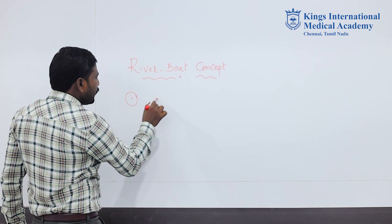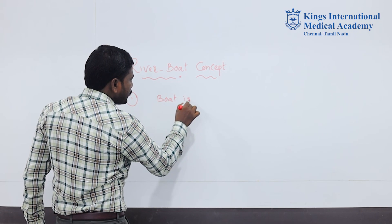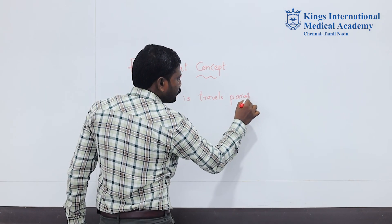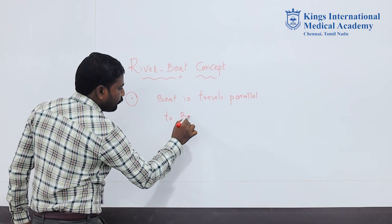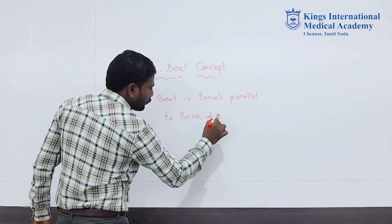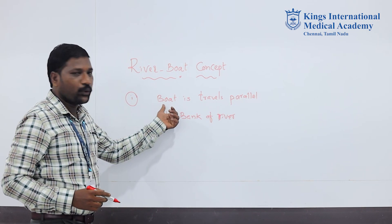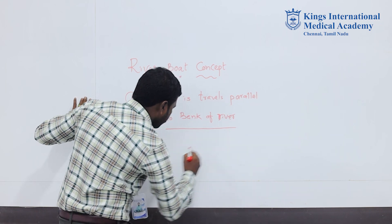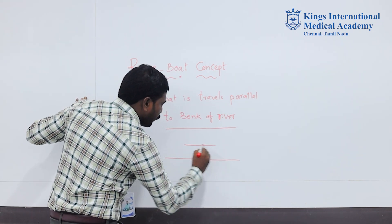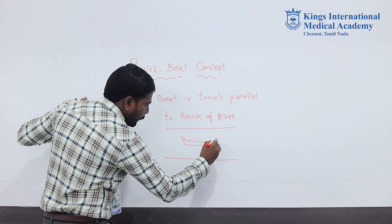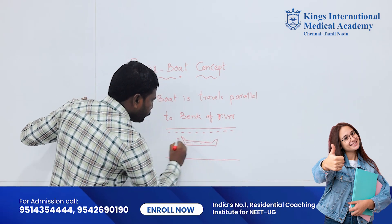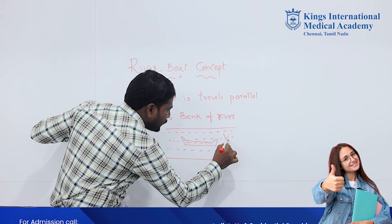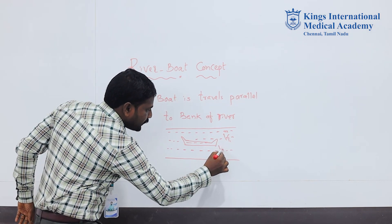Point number one: if a boat travels parallel to the bank of a river, consider a boat on water. Water has some velocity, considered as VW (velocity of water), and the boat has some velocity, taken as VB (velocity of boat).